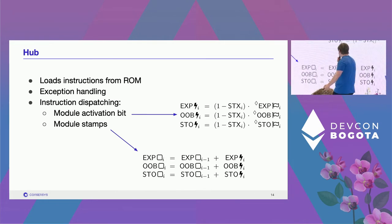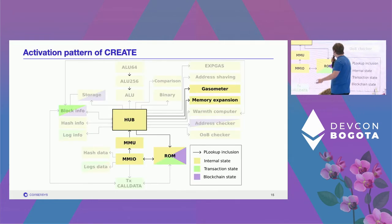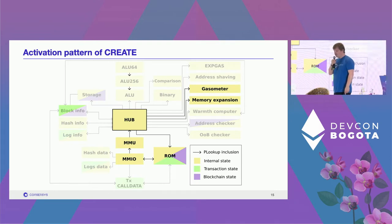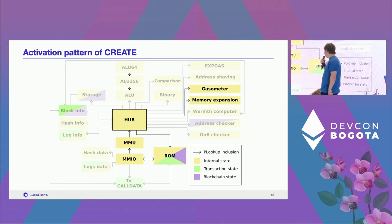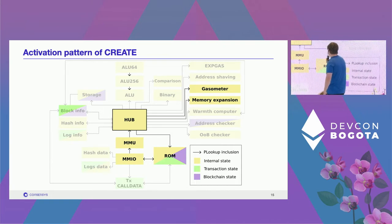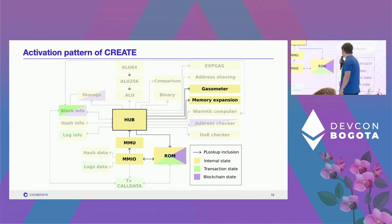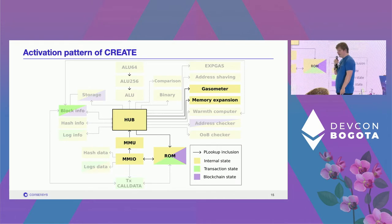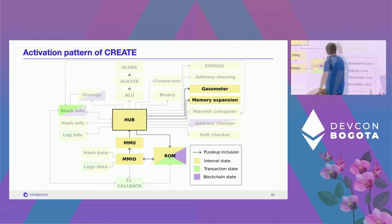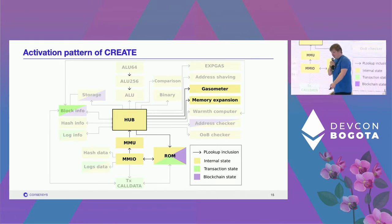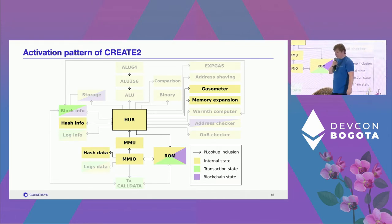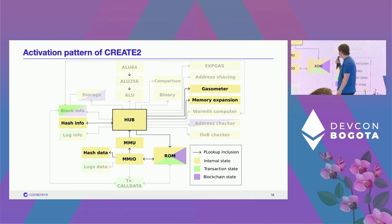If an opcode makes it past this hurdle, instruction dispatching kicks in: activation bits light up and stamps are updated to keep track of temporality. For instance, when you do a CREATE, you will be touching RAM — so MMU and MMIO modules are active. You'll also touch ROM for deploying initialization code, and gas and memory expansion. For CREATE2, since a larger hash is involved for the initialization code, you also tap into some hash modules.